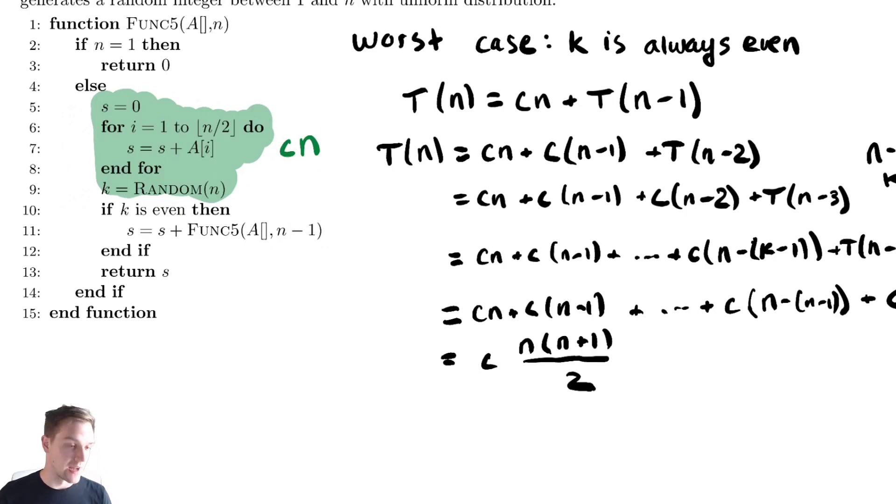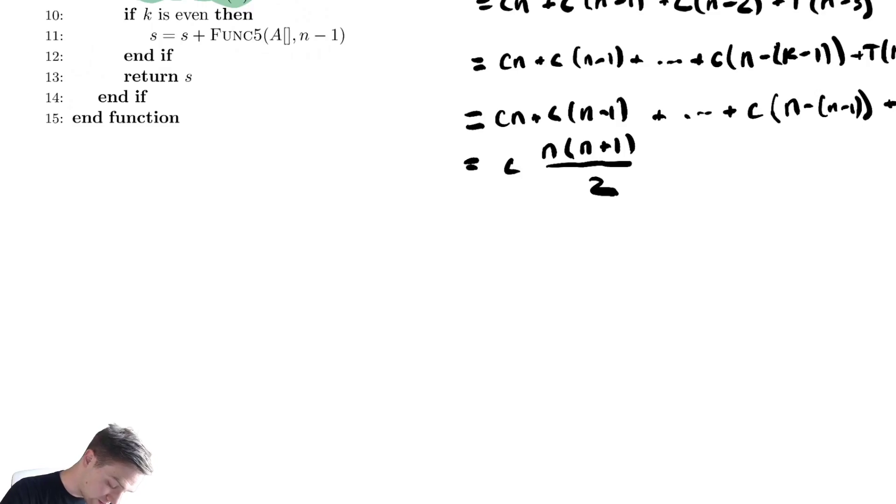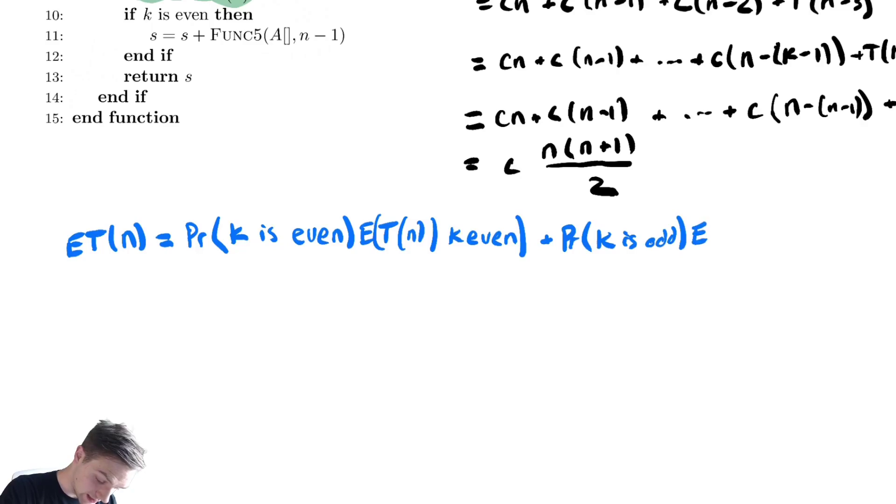So maybe we try to use our conditional probability instead. And there are really two conditions, whether or not k is even, whether or not k is odd. So our expected runtime, ET(n), we can compute that by saying, well what is the probability that k is even times the expected time given k is even, plus the probability that k is odd times the expected time given k is odd.